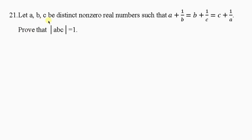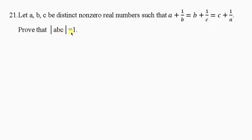The question says: let A, B, C be distinct non-zero real numbers such that A plus 1 over B is equal to B plus 1 over C, which is equal to C plus 1 over A. Prove that ABC is equal to 1.